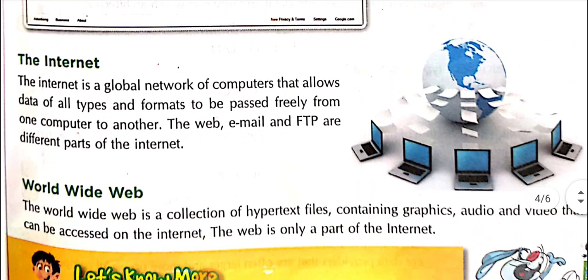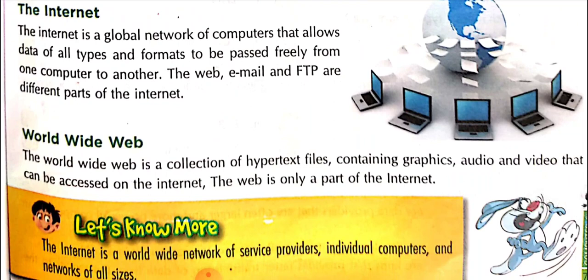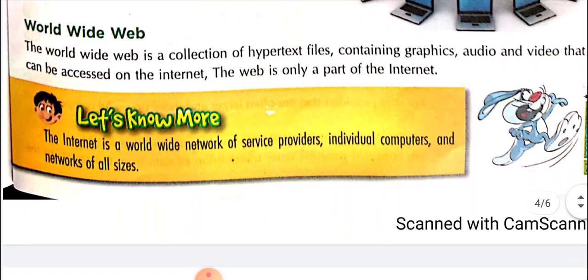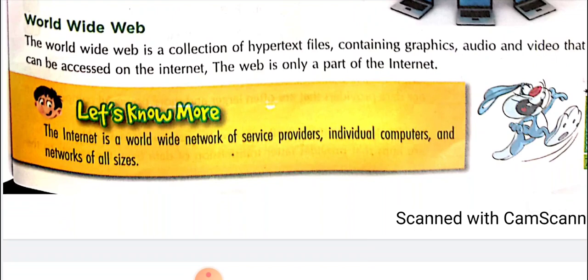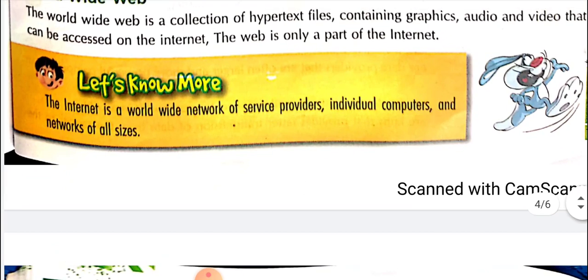Now we hear about what is the internet. The internet is a global network that can be used anywhere easily, to share information from one computer to another. The web, email, and FTP are all different parts of the internet. The World Wide Web — short form WWW — is what you see when you open Google or any browser. The WWW is a collection of hypertext files containing graphics, audio (sound only), and video (screen plus sound) that can exist on the internet. The web is only a part of the internet.